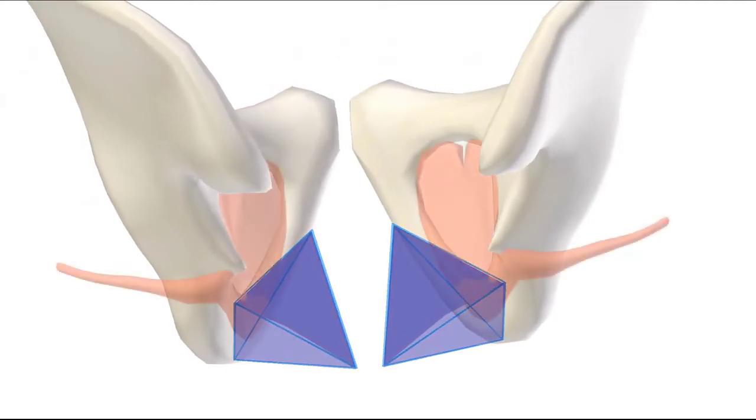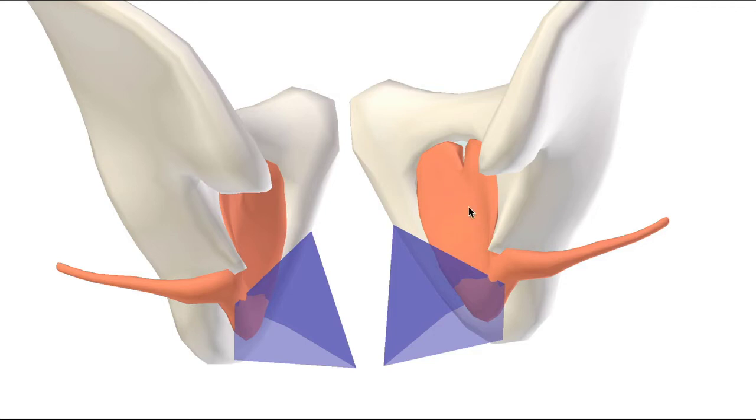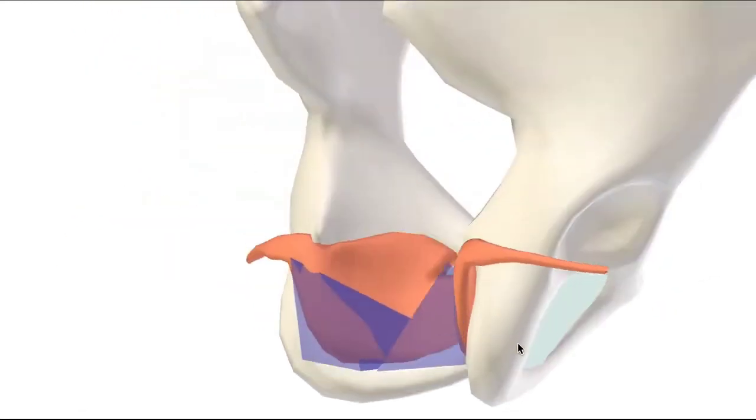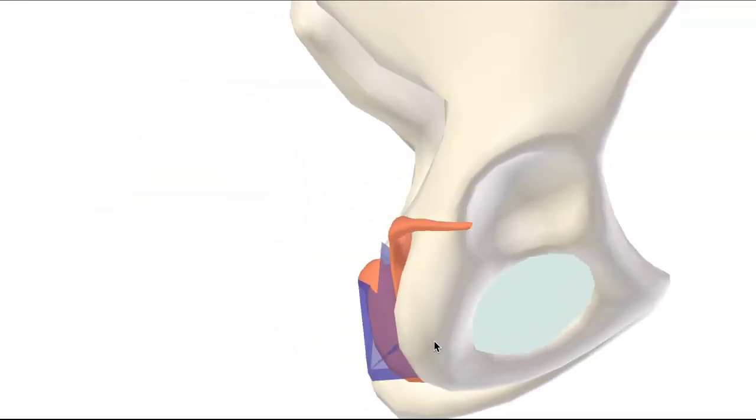Let's bring in the lateral wall now, which is the obturator internus muscle, as well as part of the ischium, which is this part of the pubic bone.